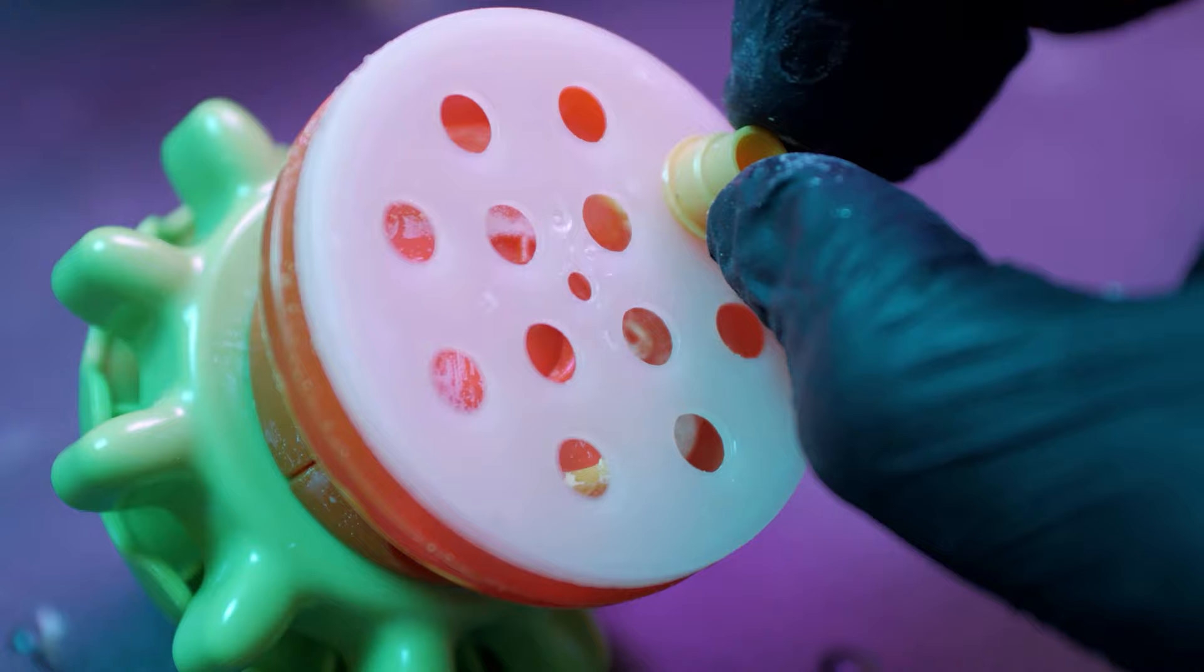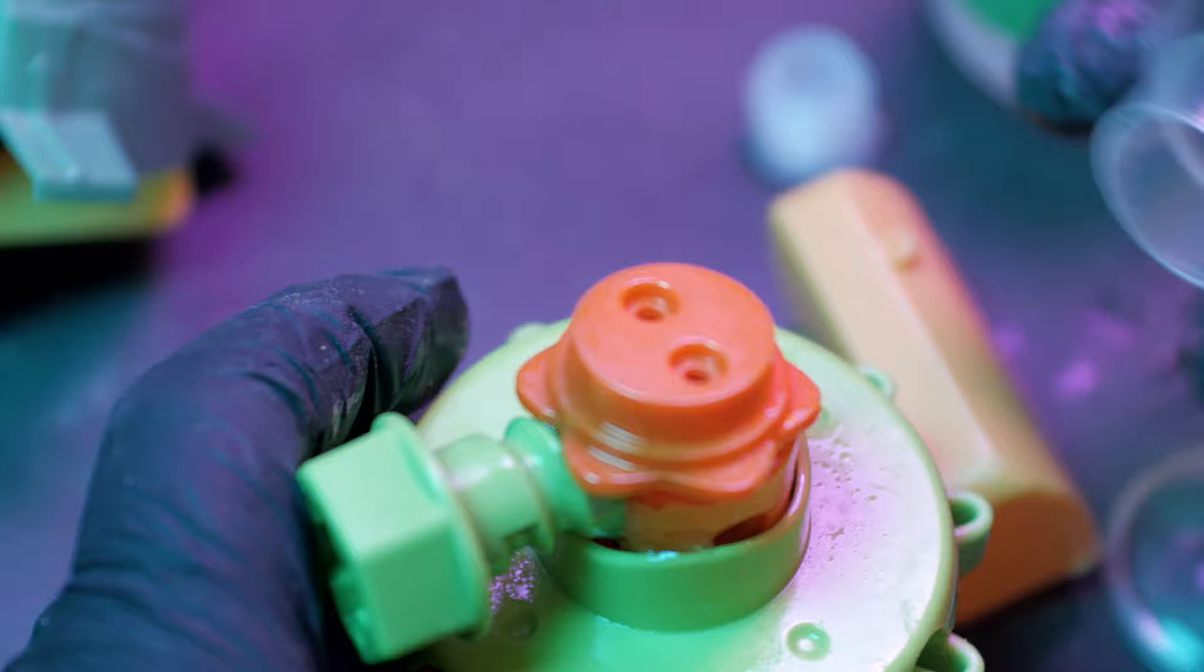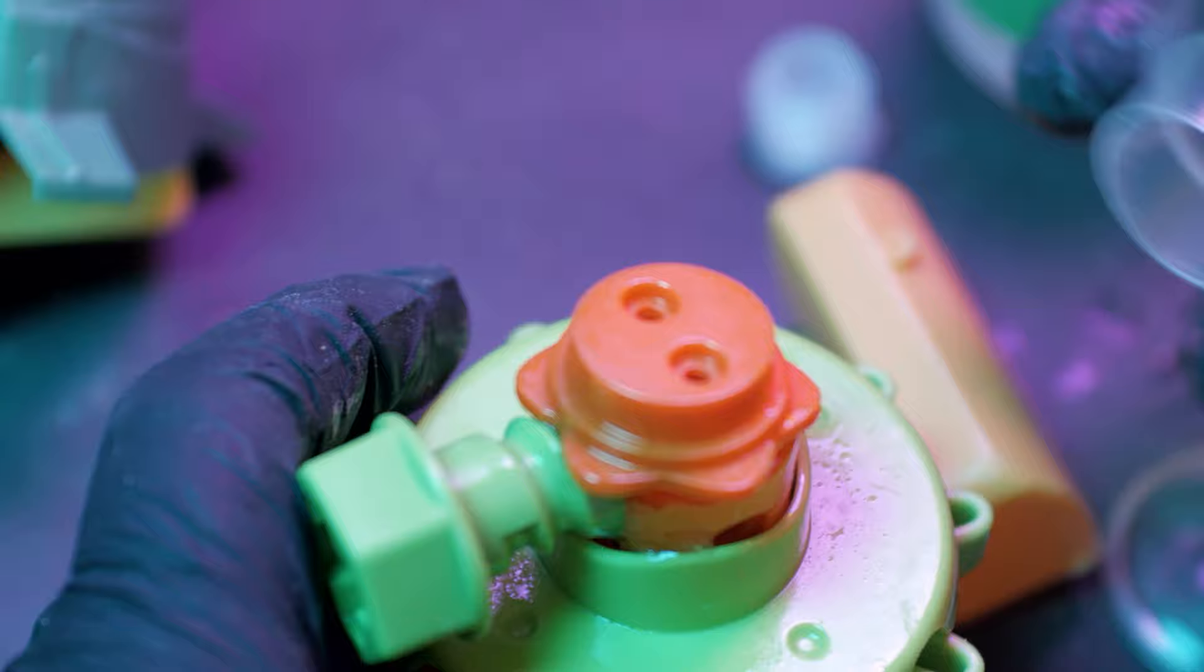To give a bit more dimension to the nozzle, I added a bunch of these little cylinder things from the tractor kit. Before giving them a hot glue shower to lock them in place.